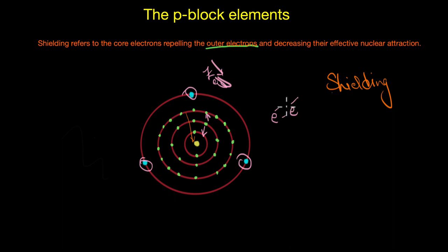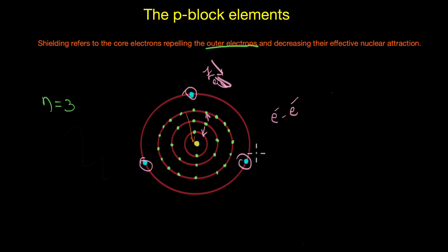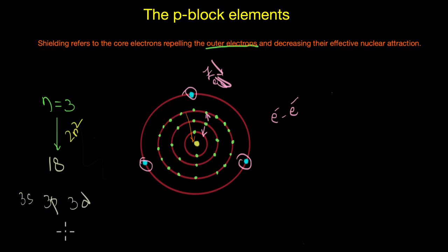But do all inner electrons shield the outer electrons equally effectively? Suppose the valence electrons are in the fourth shell and the third shell is completely filled, accommodating 2n² = 18 electrons spread across the 3s, 3p, and 3d sub-shells. Do electrons in all these sub-shells have the same shielding impact? The answer is no — orbitals in different sub-shells have different degrees of shielding depending on their shapes and how close their electron density is to the nucleus.